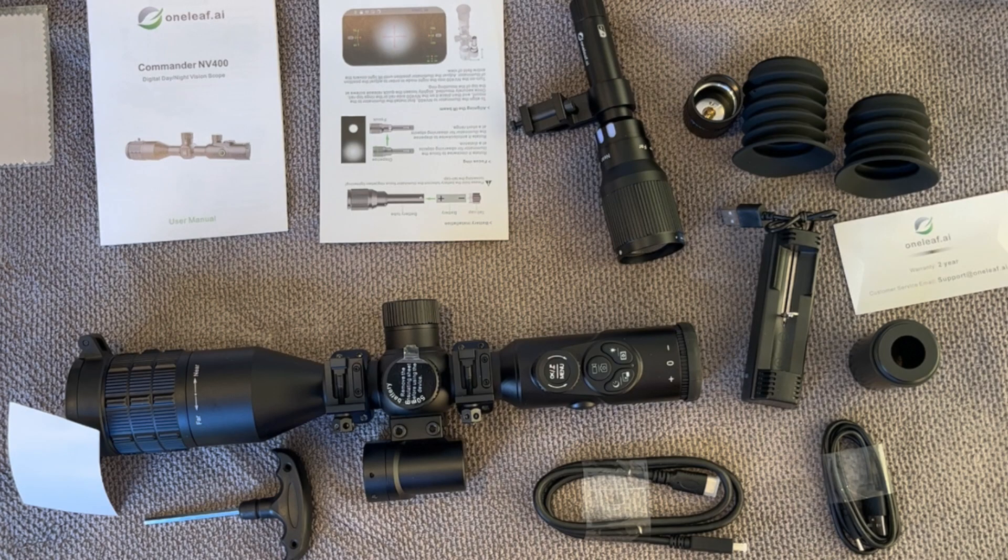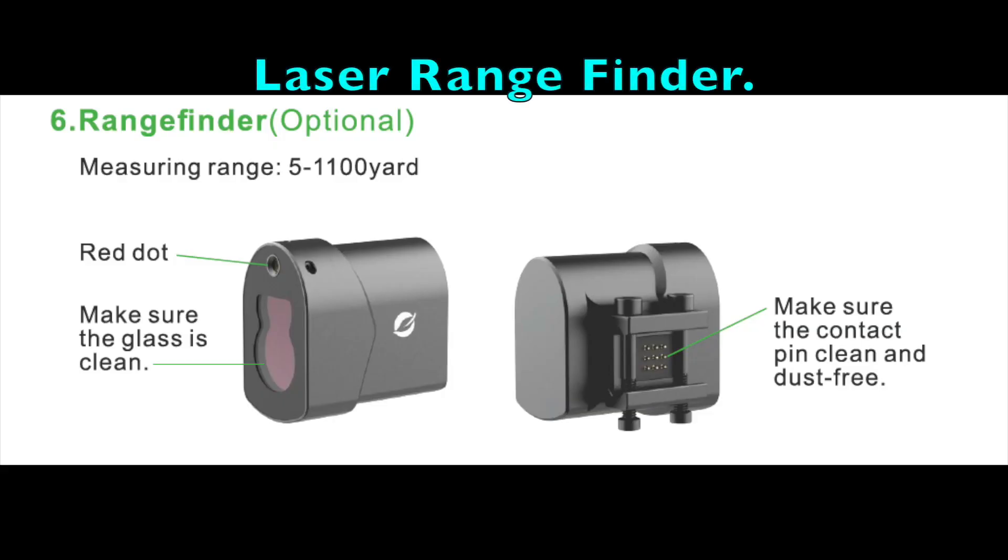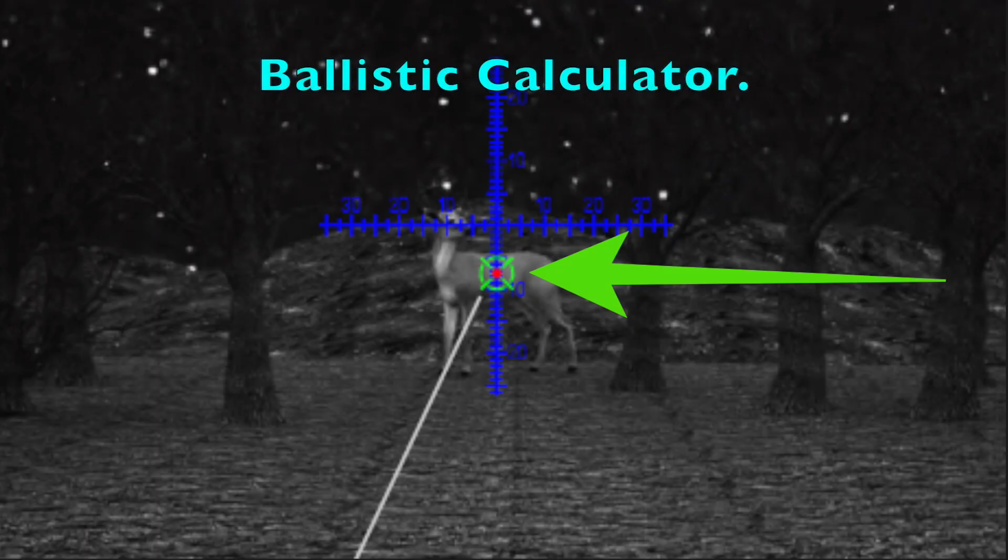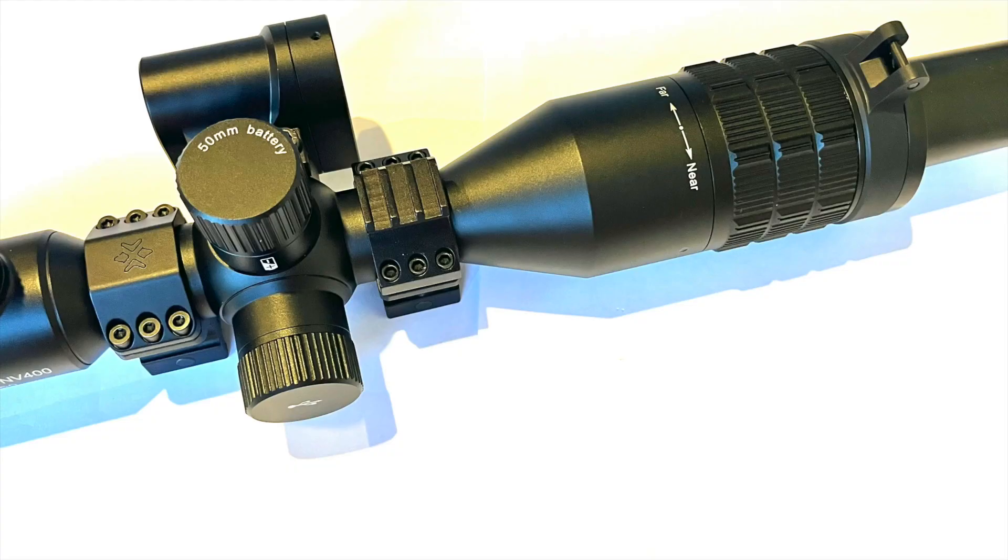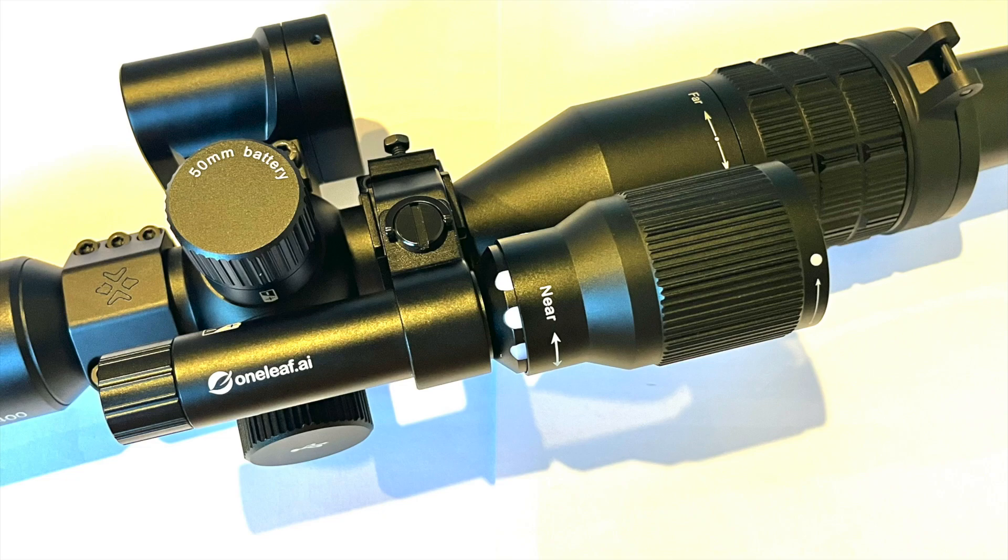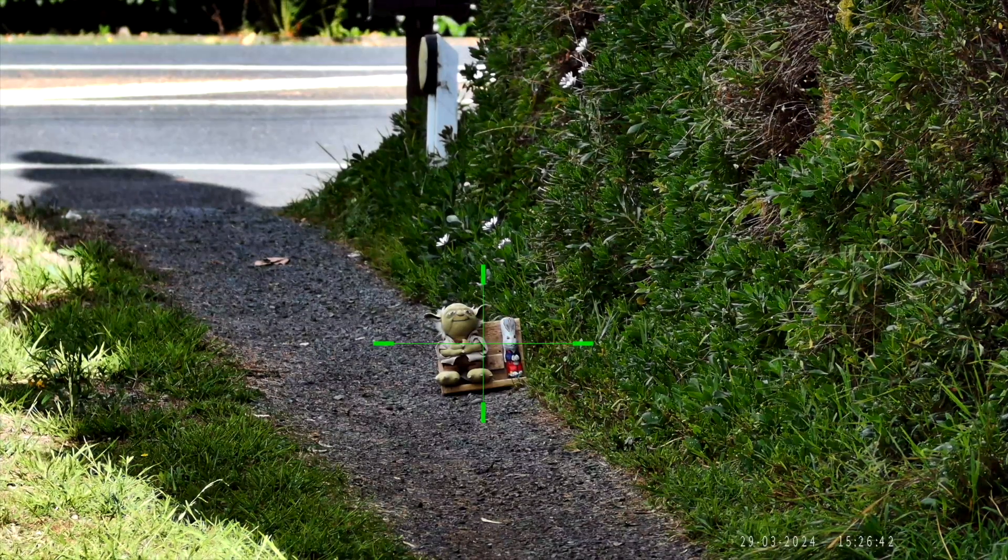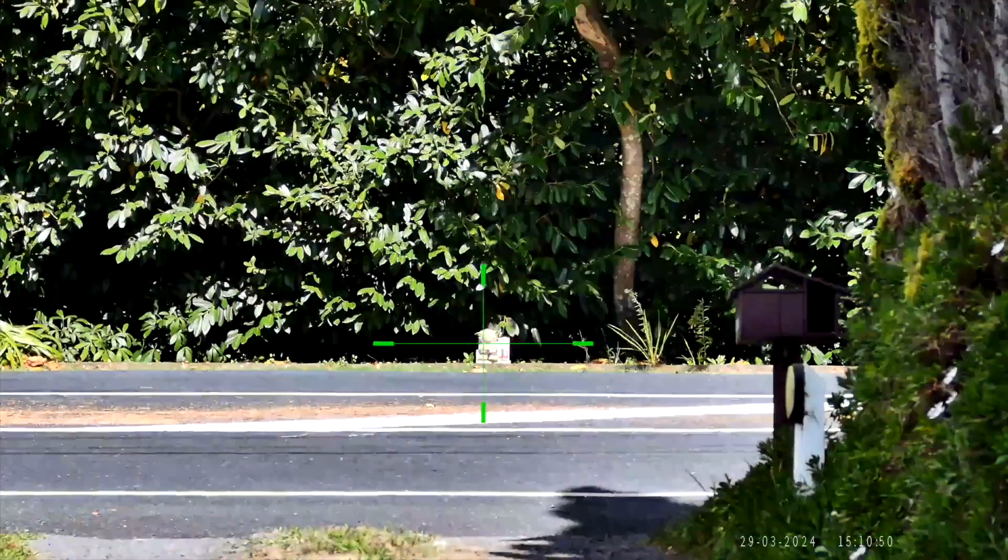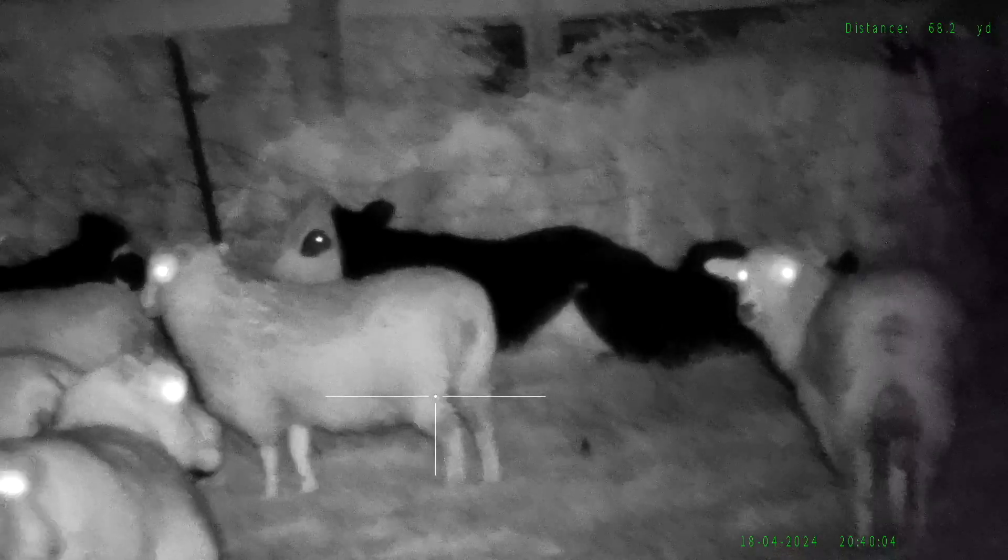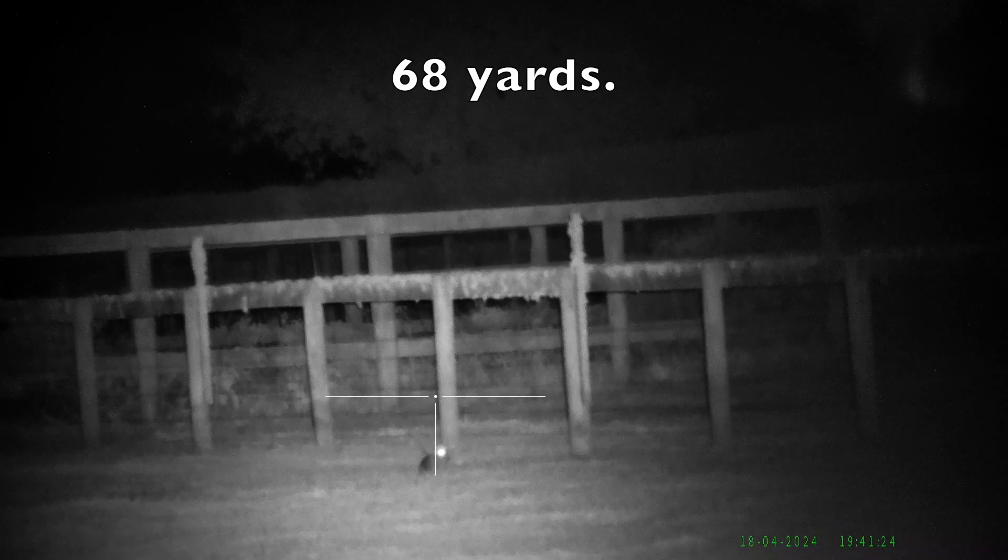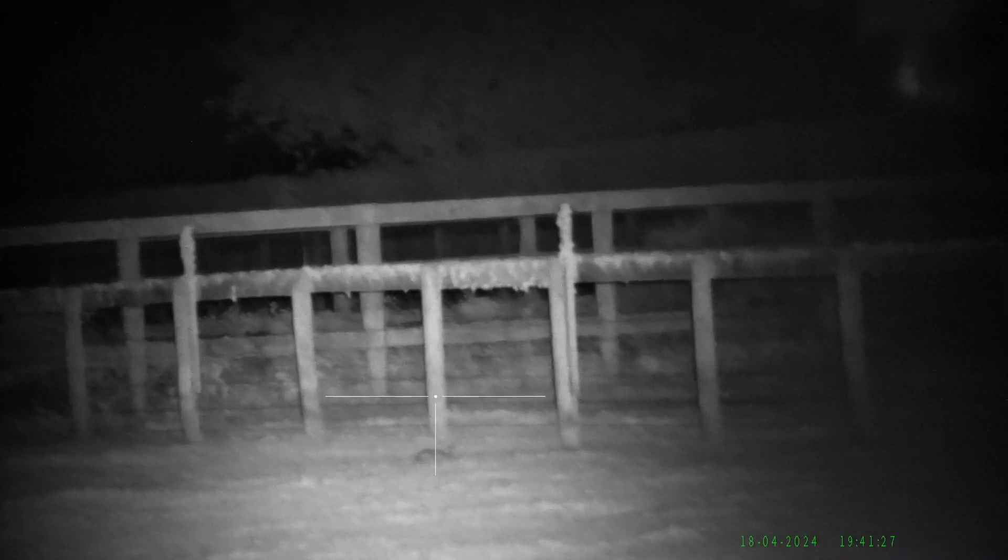Final thoughts? It seems crazy to call the Commander NV400 an entry level scope, because it comes with many of the features you'd expect to find in a top level scope, yet it has an entry level price tag. The only thing weighing it down, no pun intended, is its weight. But in my opinion, that is easily outweighed by its performance and its price. If you're looking for a digital scope that has great performance during the day, and can see in the dark with infrared night vision, and a laser rangefinder, and a ballistic calculator, this one's going to fit the bill. And it's not going to break the bank.